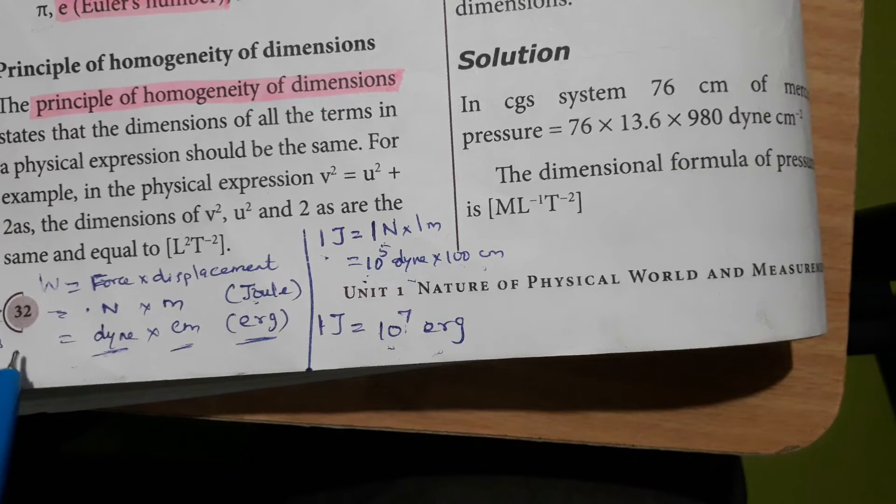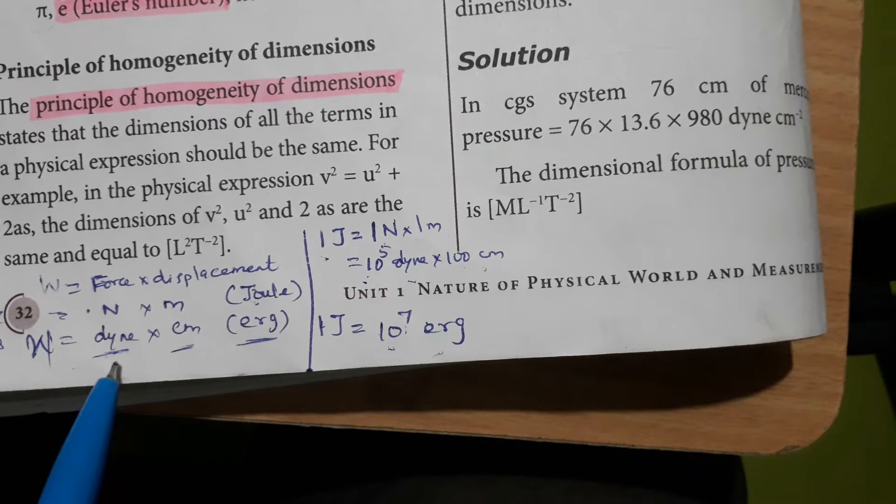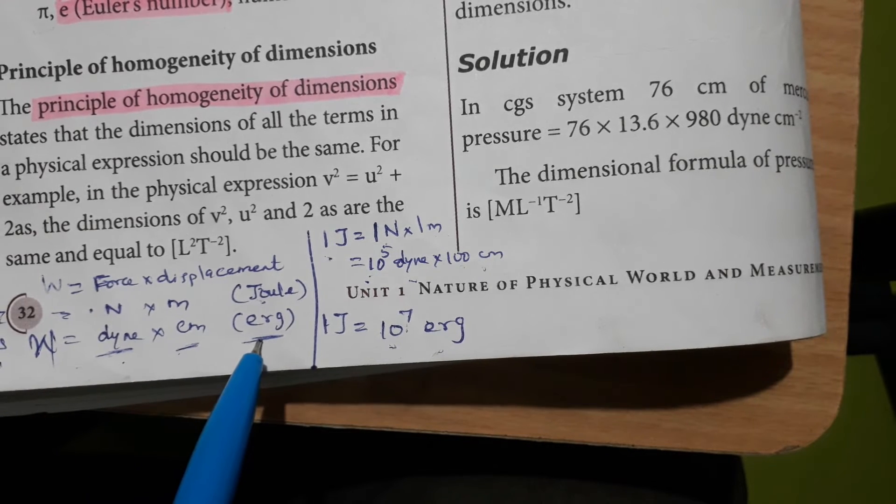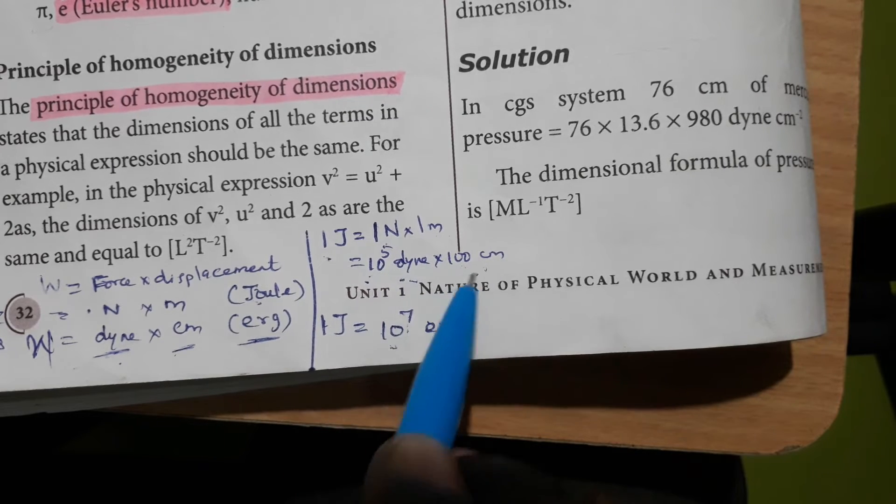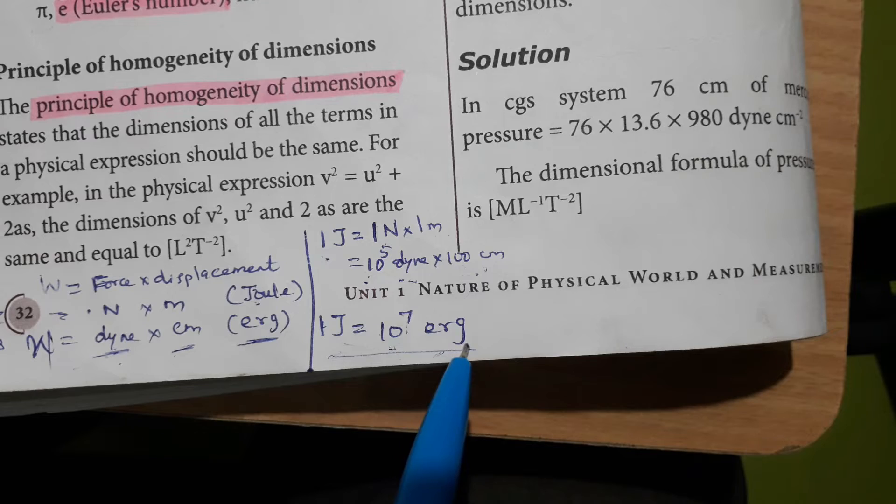Here, because you know that work done in CGS is equal to dyne into centimeter, which equals erg. So here dyne and centimeter, the final unit becomes 1 Joule is equal to 10 to the power 7 erg.